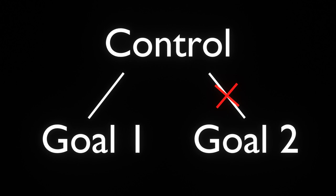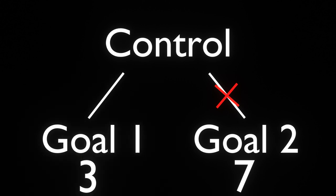Each control can have at most one goal making use of it at a time. This means that if two goals could both be started and both would make use of the same control, only one of them can run. To determine which goal runs in a situation like this, there is a numeric priority — the goal with the lowest numeric priority will be the one to run. A goal with a low numeric priority can even replace a goal with a higher numeric priority if it's already running, but only if that goal is able to be stopped at the current moment. This means that in some situations, a goal that should be stopped to run a goal with lower numeric priority may actually prevent itself from being stopped until it's finished performing some important task.